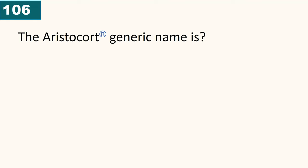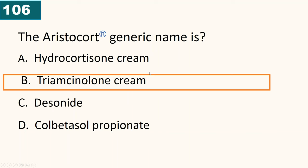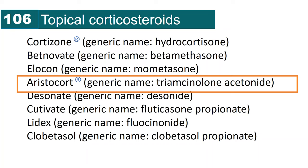The brand Aristocort — what is the generic name of this drug? Most drugs ending in '-cort' are often corticosteroids. Aristocort is triamcinolone. Here are other topical steroids such as hydrocortisone, betamethasone, and mometasone — these are examples of topical steroids.